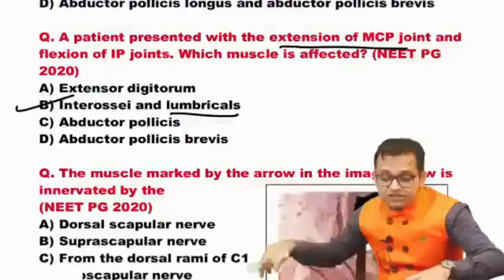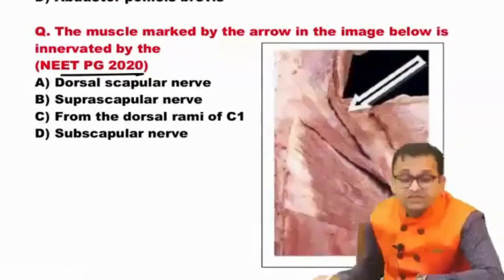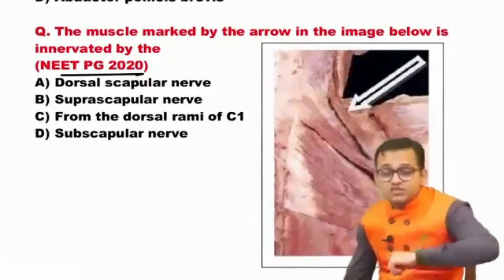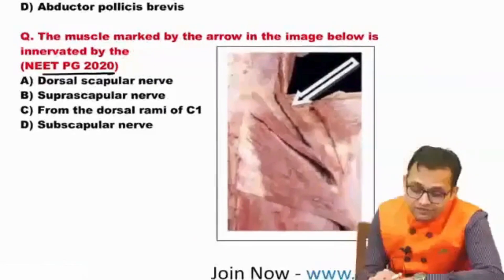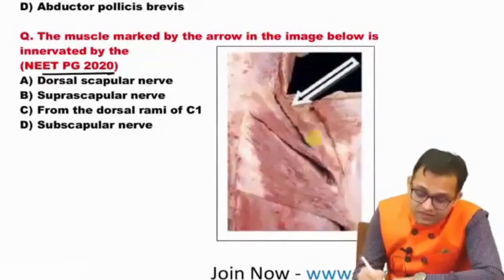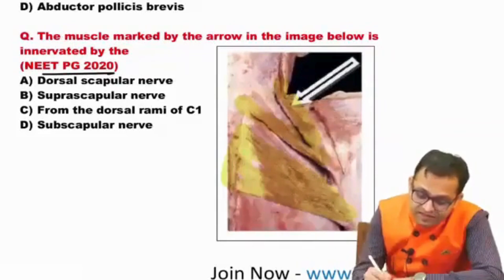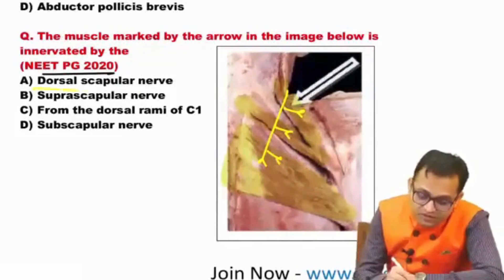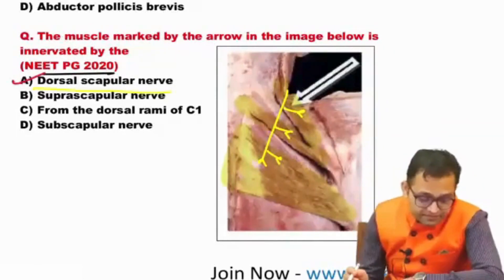We have to study the short intrinsic muscles. This muscle shown is the levator scapulae, then rhomboid minor and rhomboid major. The dorsal scapular nerve passes here — the dorsal scapular nerve supplies all these muscles. So the answer is A.